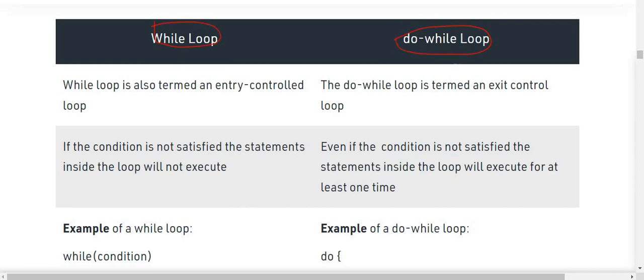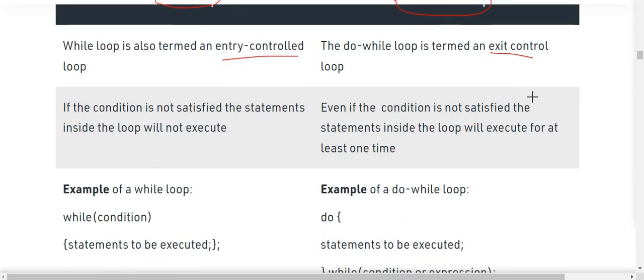The while loop is termed as an entry control loop, and the do-while loop is termed as an exit control loop. In a while loop, if the condition is not satisfied, the statements inside the loop will not execute. In a do-while loop, even if the condition is not satisfied, the statements will execute at least one time. So if you want to display a menu, you would use the do-while loop because it will execute at least once regardless of the condition.